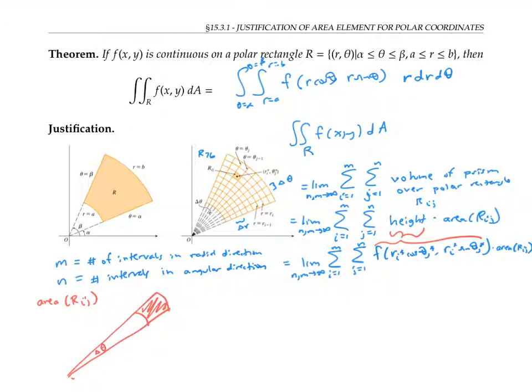The angle of the wedge is Δθ. And I'm going to call this first radius r_(i-1) and the second larger radius I'll call r_i. Now I know that the area of a circle of radius r_i is π times r_i squared.